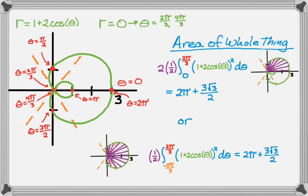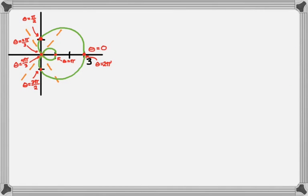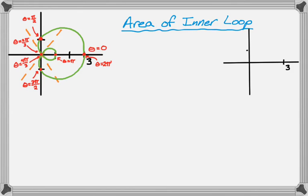Another really common question is to find just the area of the inner loop. So if I want to find just the area of the inner loop, then what I'm going to have to do is know when I start the inner loop, when I stop the inner loop. But I already know that because I've talked about it quite a bit. So I have this picture. Let me back that up.